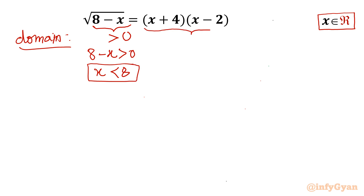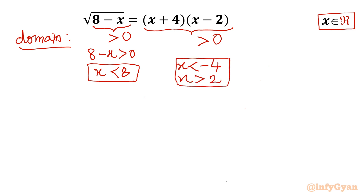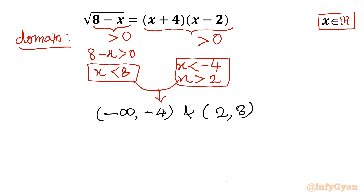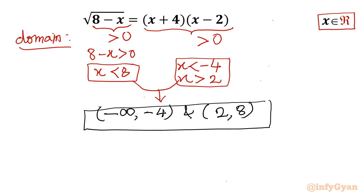Now coming to the RHS, the product on the right hand side should always be positive. So either x should be less than minus 4 or x should be greater than 2. Taking the intersection of both conditions, the domain becomes minus infinity to minus 4, and 2 to 8. Our answer should lie in this interval only.